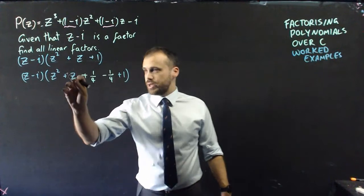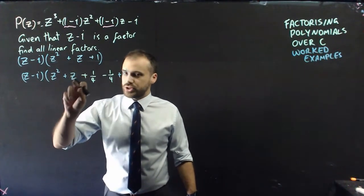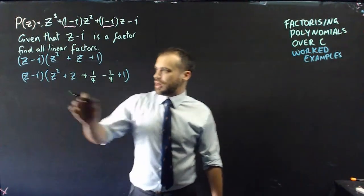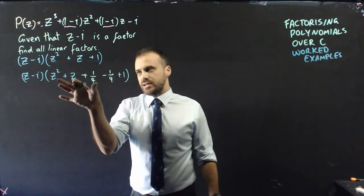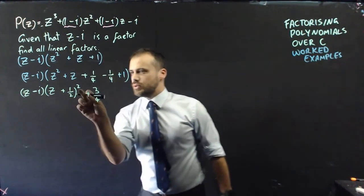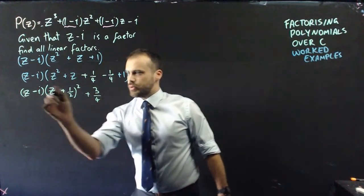So, first step to completing the square, halving our coefficient here, which is 1 half, and then squaring it, which is 1 quarter, and then adding it and subtracting it. And, then I'm going to write that as a perfect square. Now, when I do write that as a perfect square, I get z plus 1 half squared, and then this bit on the end becomes positive 3 quarters.